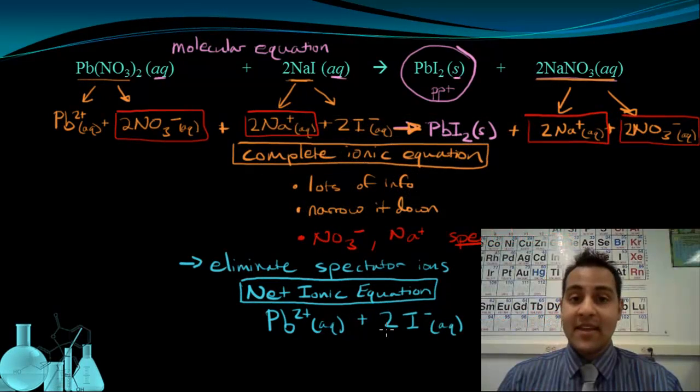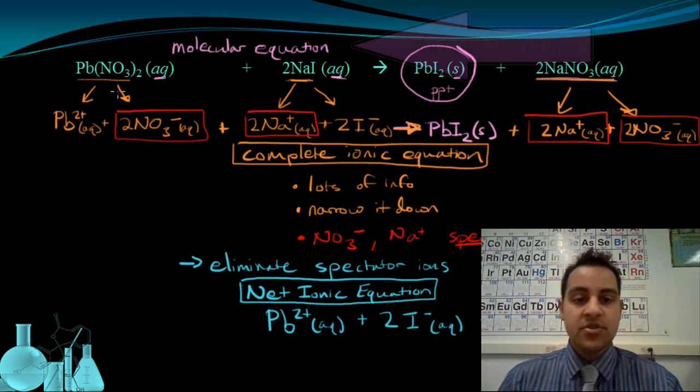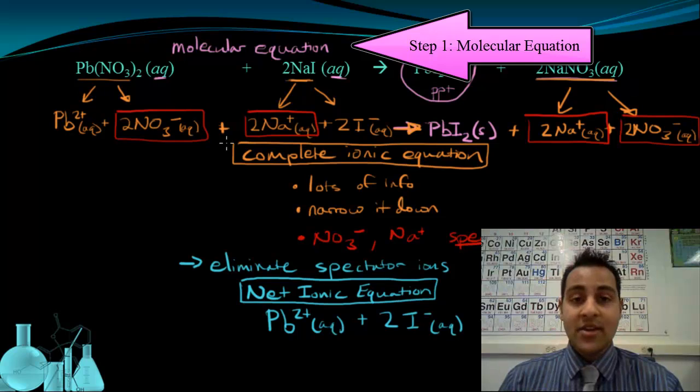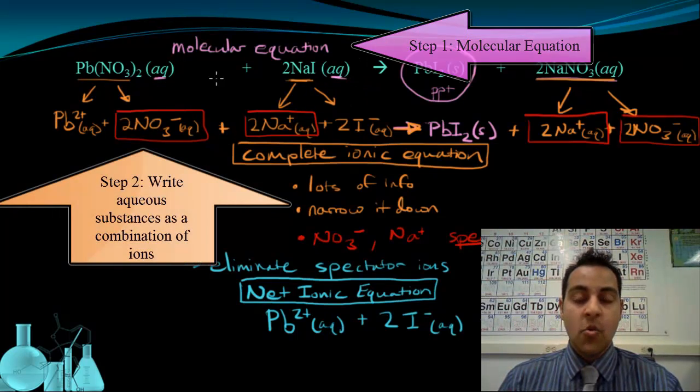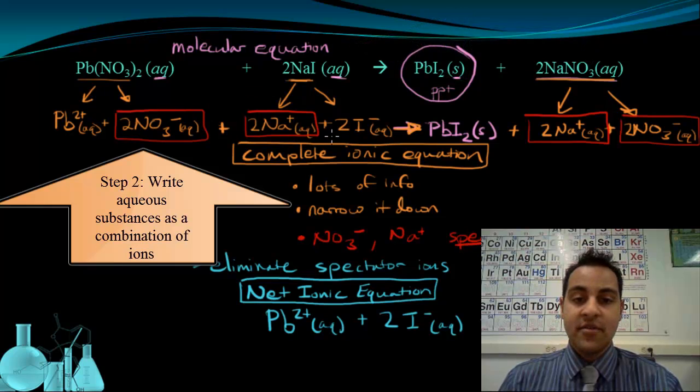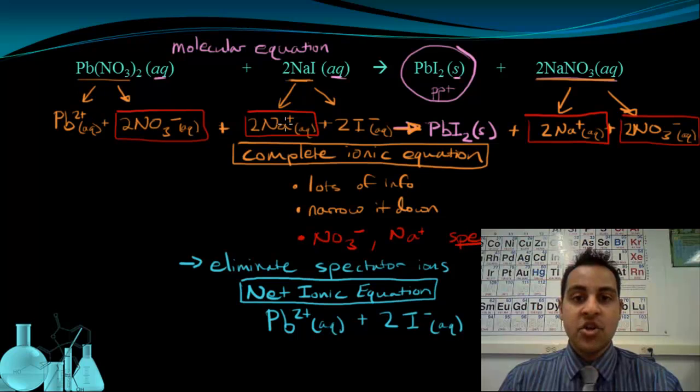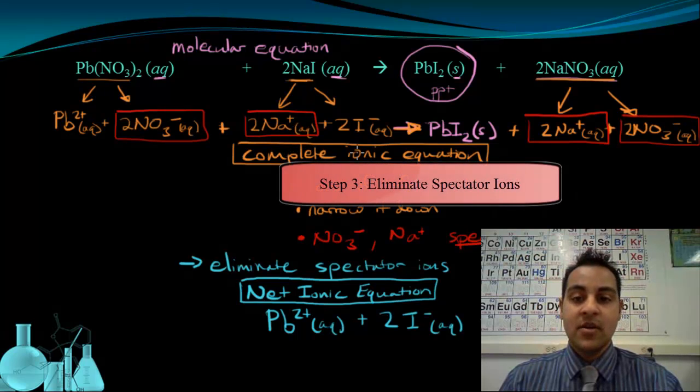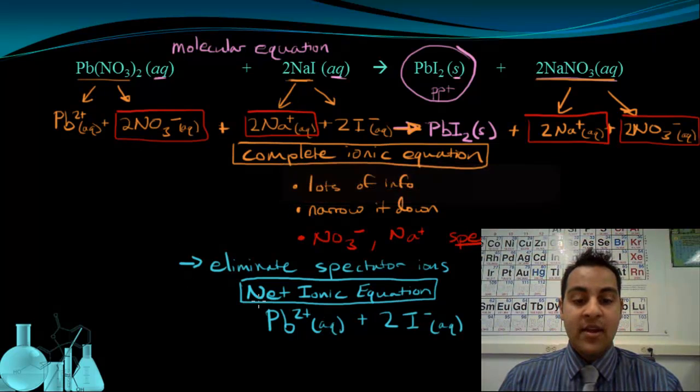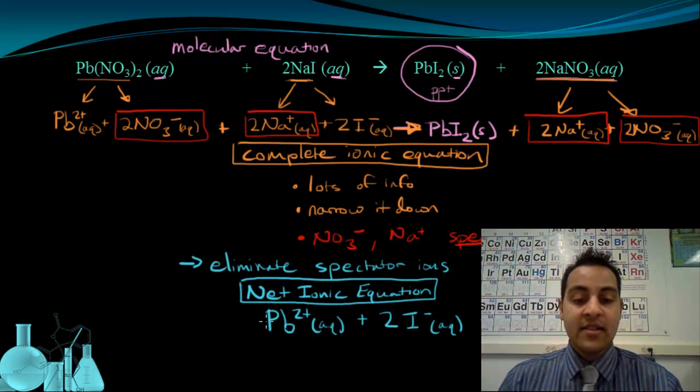So to recap how to get to the net ionic equation, you start with the molecular equation, and you rewrite any substances that are labeled aqueous. We rewrite them as a combination of their ions. Once we've done that, we look to see if there are any ions that show up the same on the reactant and product sides. Those are the spectator ions, and we eliminate them. We rewrite what's left over, and we get our net ionic equation that highlights the actual reaction taking place.